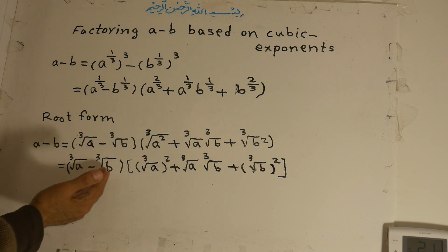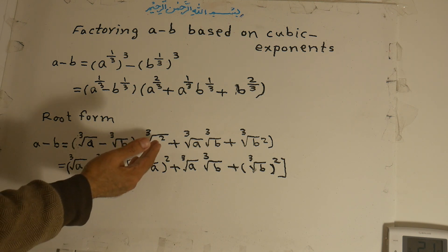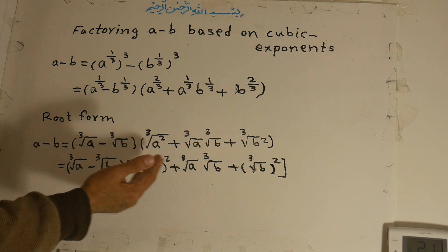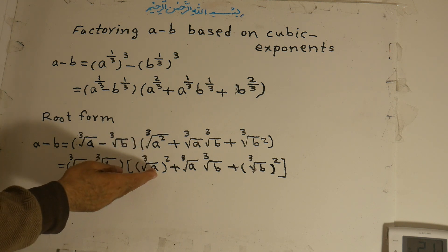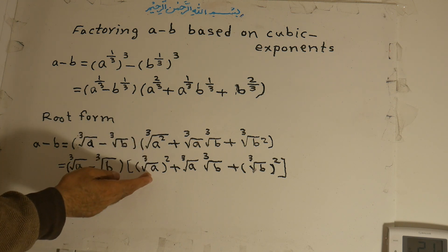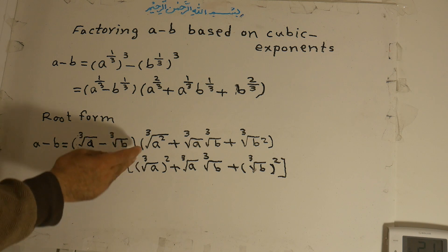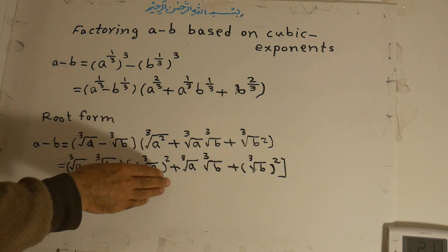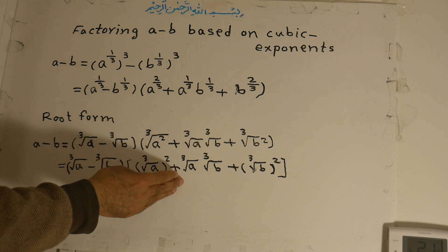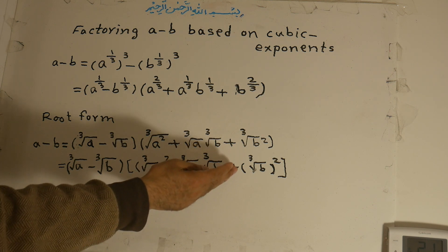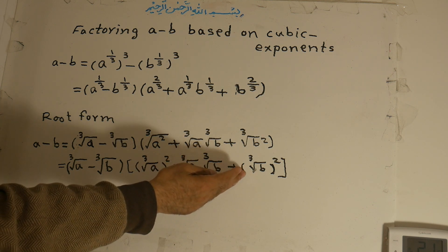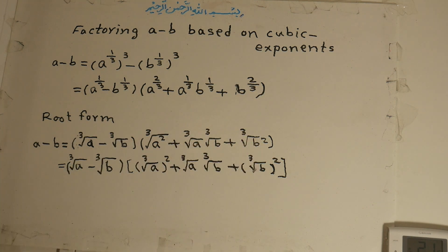We can also write: a under the cubic root minus b under the cubic root. The other factor, first written under the cubic root then to the power of two, means a under the cubic root, all to the power of two, plus a under the cubic root times b under the cubic root, plus b under the cubic root, all to the power of two. Both forms have the same meaning.